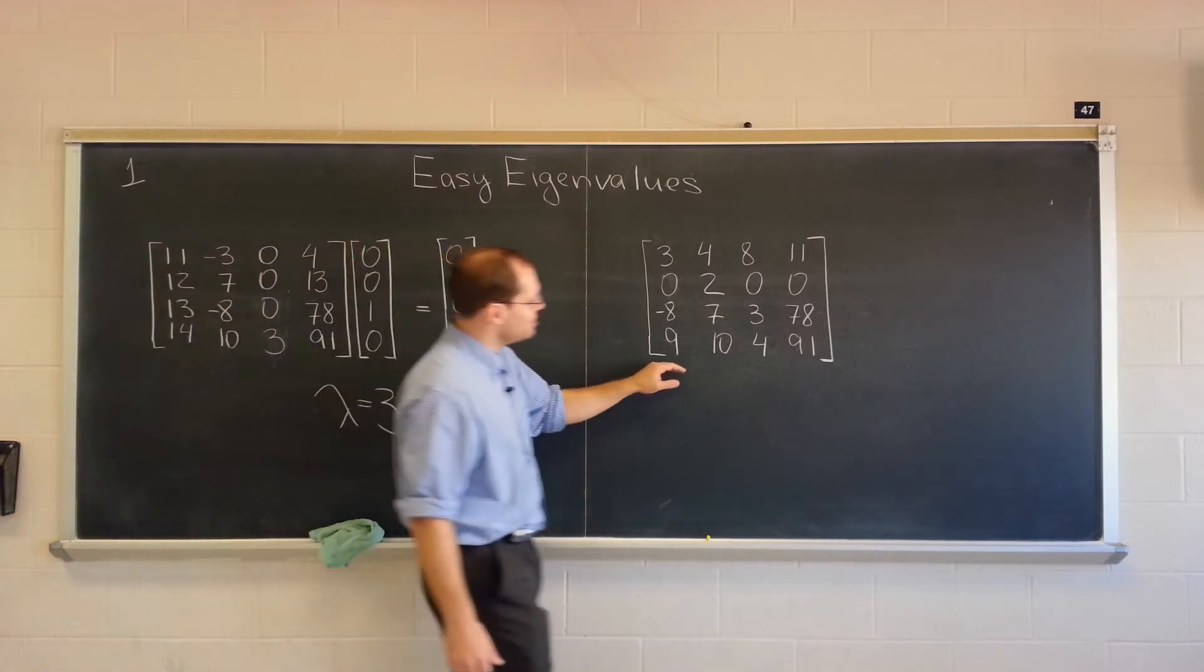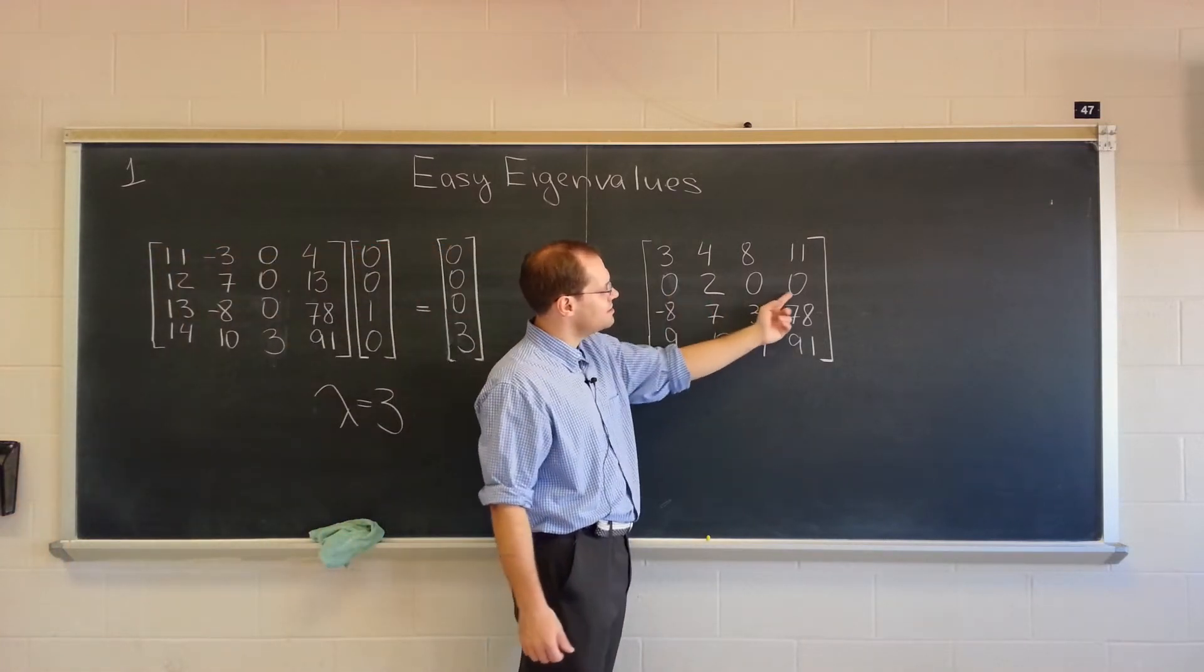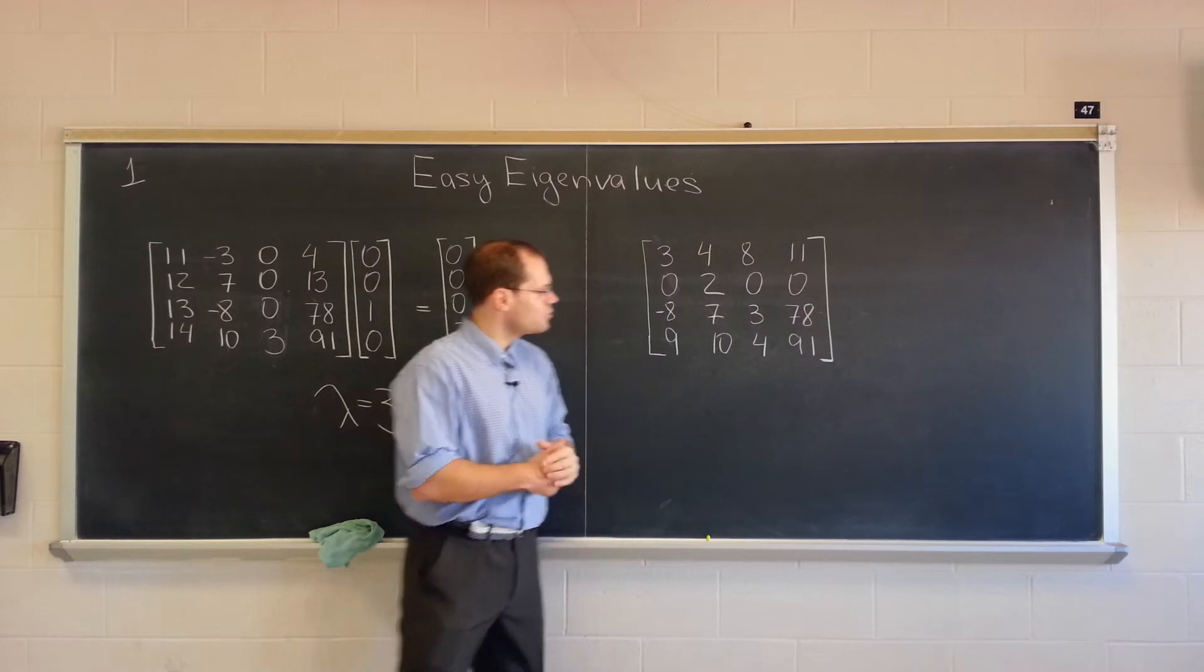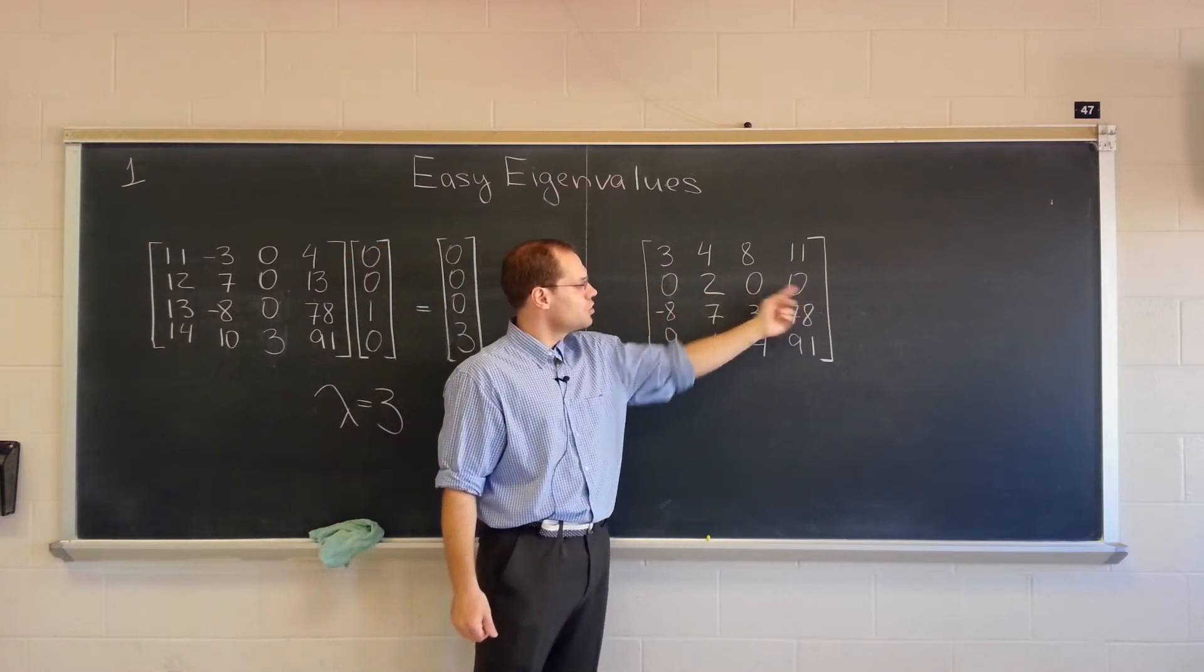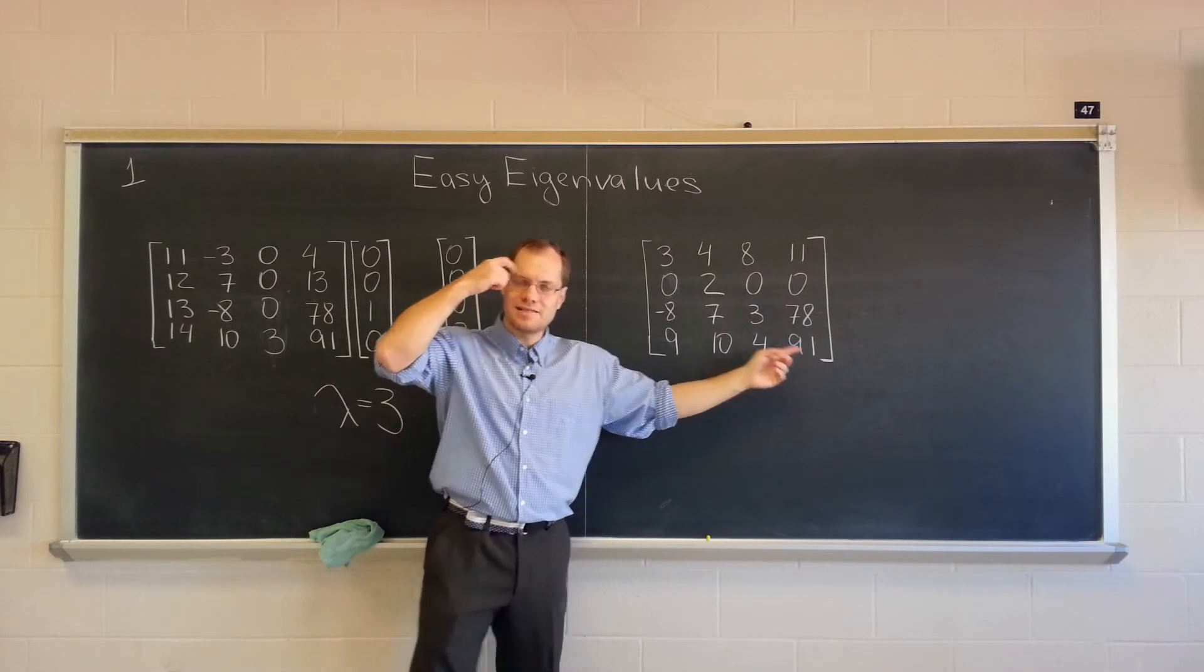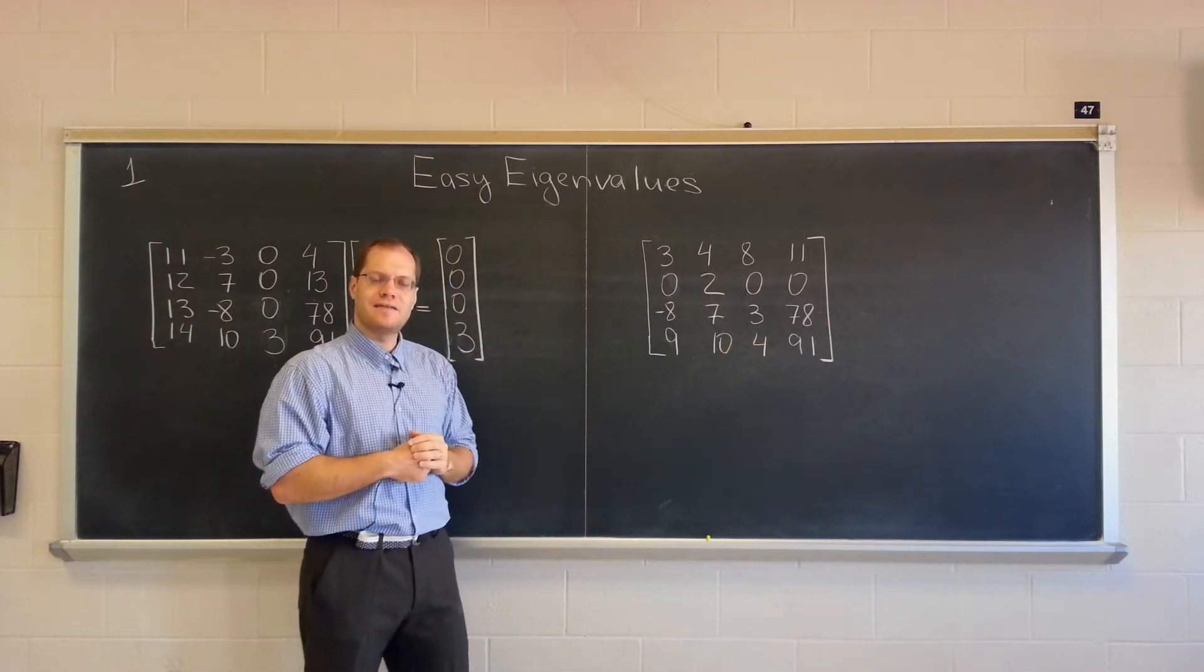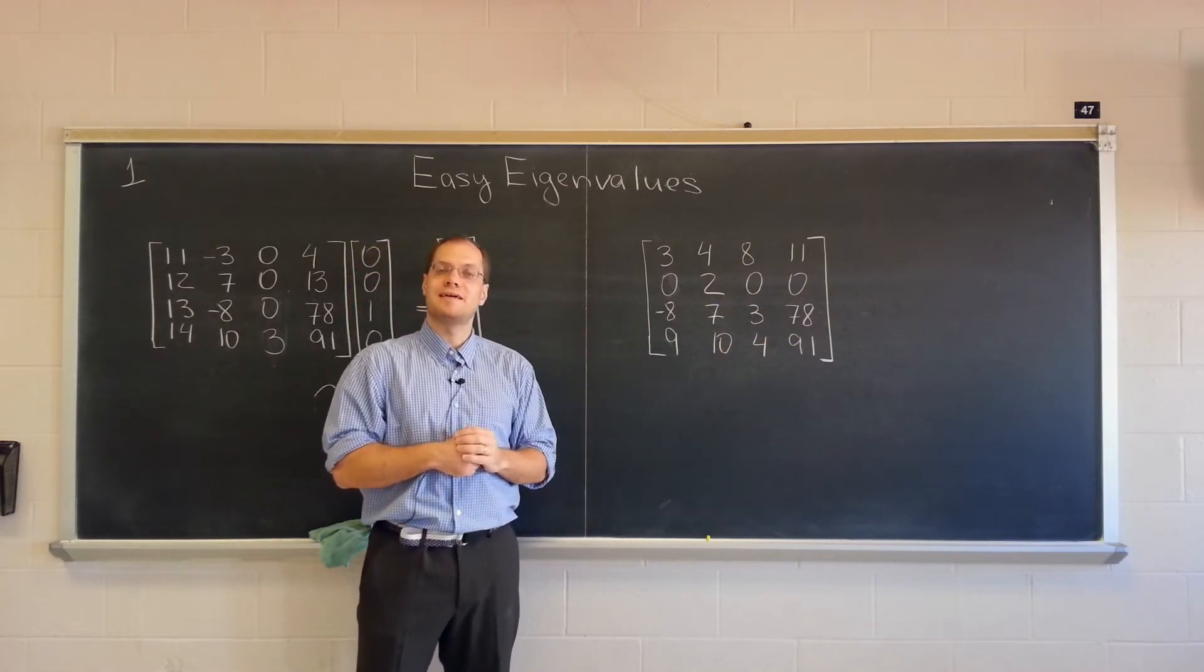What about this matrix? Here it's a similar situation, except it's in a row. The only non-zero entry in a row is on the diagonal. Does that actually tell you something about eigenvalues and eigenvectors? And the answer is yes.